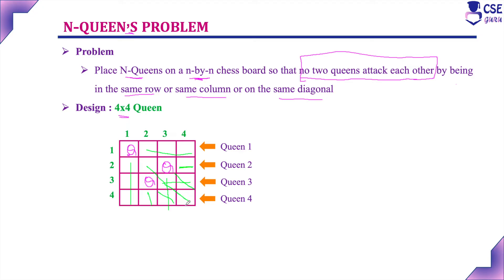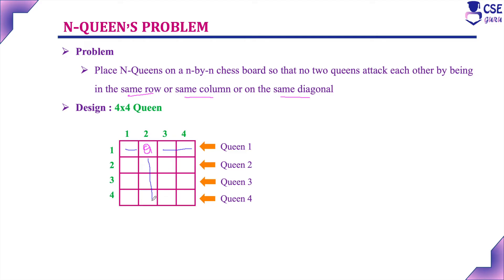So we try another possibility. We had considered (1,1); now try (1,2). The same column, same row, and same diagonal are blocked. For the second queen, the possibilities are (2,1) and (2,4). Try (2,1). We place the queen at (2,1); same row and same column are blocked. We can only place three queens — there is no place for the fourth queen.